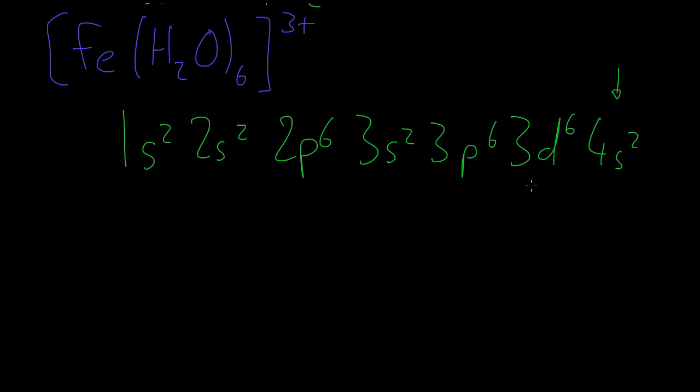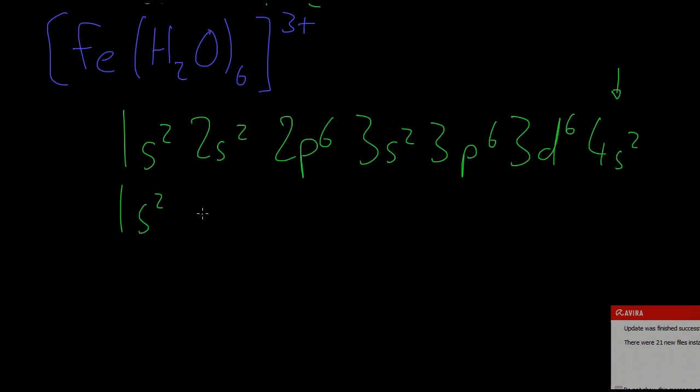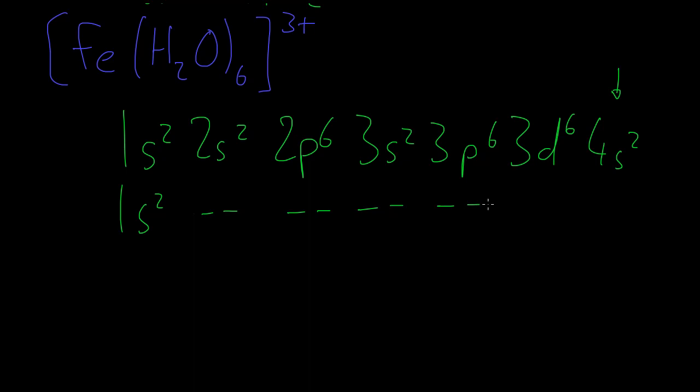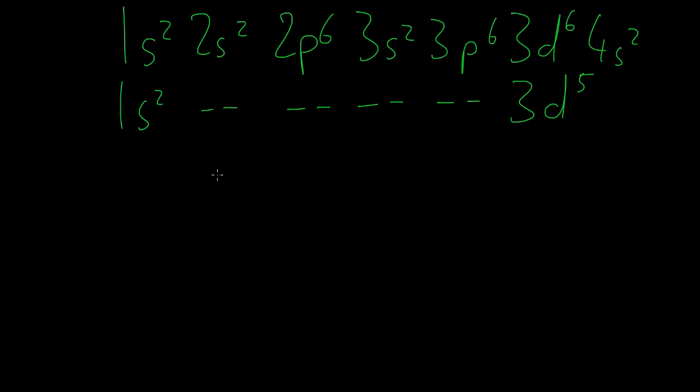But when it forms a 3+ ion, we lose three electrons. So we lose two from the 4s level and one from the 3d level. So we get a new electron configuration which is exactly the same up to here where we have 3d⁵ and then it stops because our 4s level is empty. So if we draw out the boxes that represent this, we'll just go from the 3d level. We have this 3d which has its five boxes and then we have the 4s at a slightly lower level with its one box, 4s.